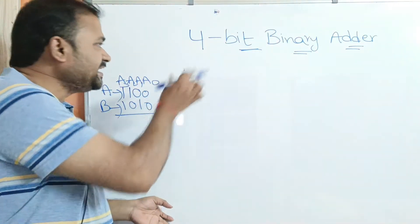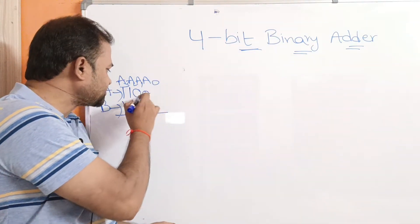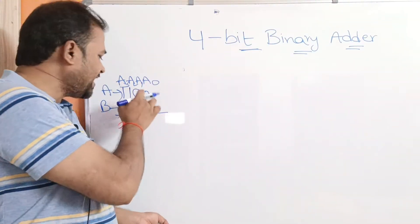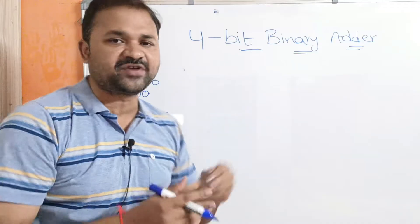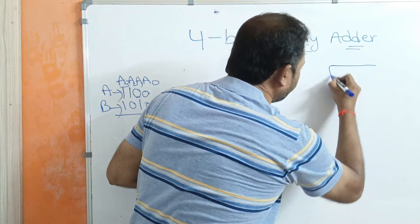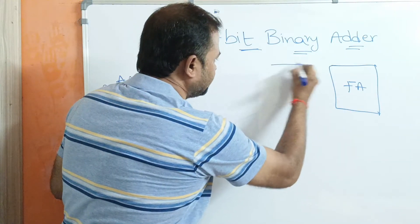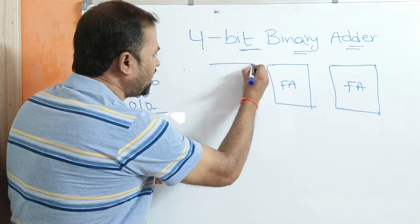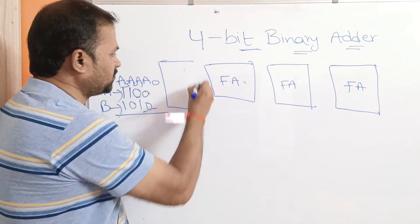Here we need 4 full adders, because we need to add the first pair of bits, then the next pair along with the carry from the previous, and so on. Since the size of the binary number is 4 bits, we need 4 full adders: the first, second, third, and fourth full adder.